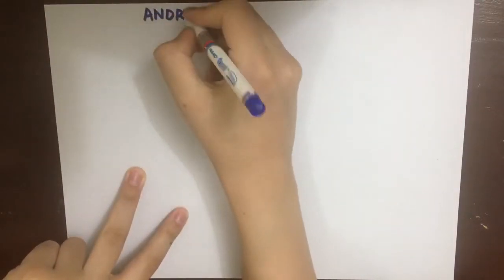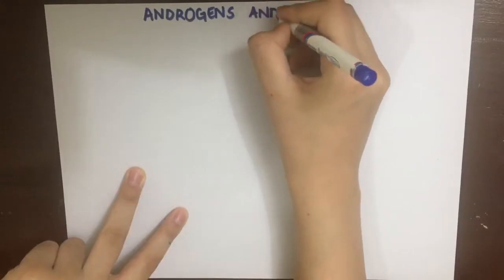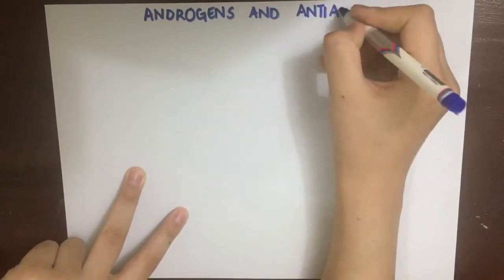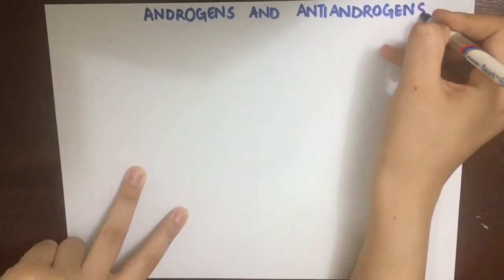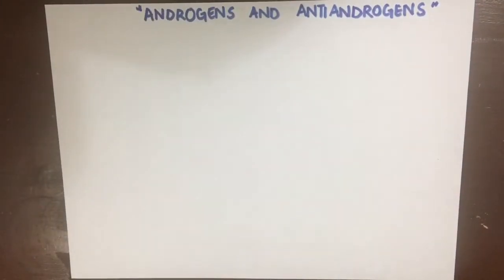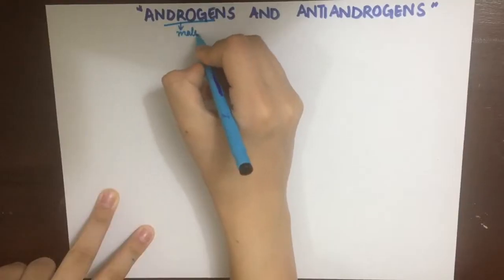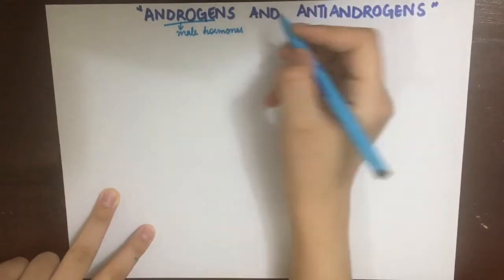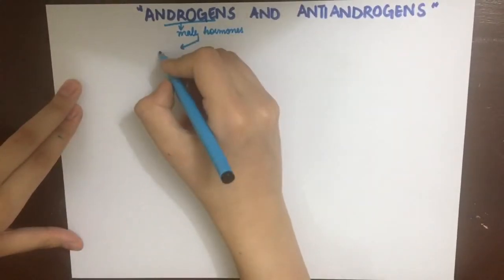Androgens are male hormones, chiefly testosterone, that is released by the Leydig cells under the stimulation of luteinizing hormone. They play their role in male traits and reproductive activity. Testosterone has two activities: one is its androgenic activity and the second is the anabolic activity.